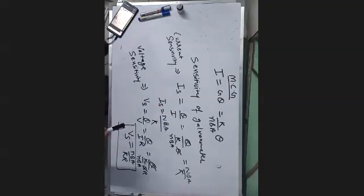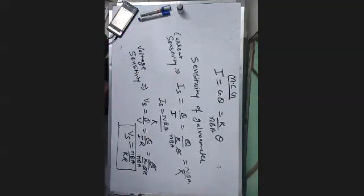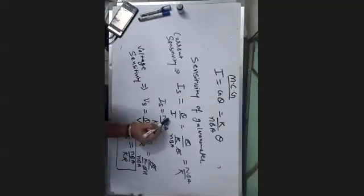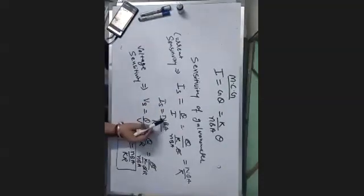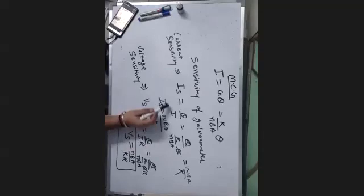Current sensitivity will change but voltage sensitivity will not change. The way to do this is to increase the number of turns. As you increase the number of turns of the coil of the galvanometer, according to the formula NBA by k, the current sensitivity will increase. But if you look at the voltage sensitivity formula, the number of turns N also appears there.